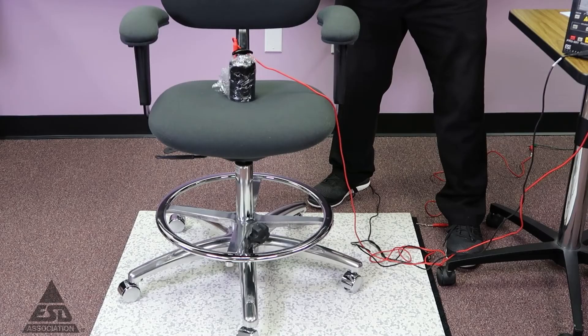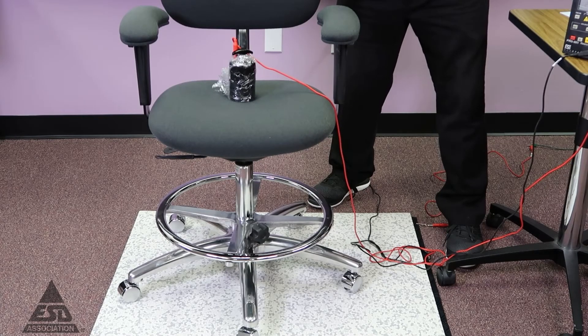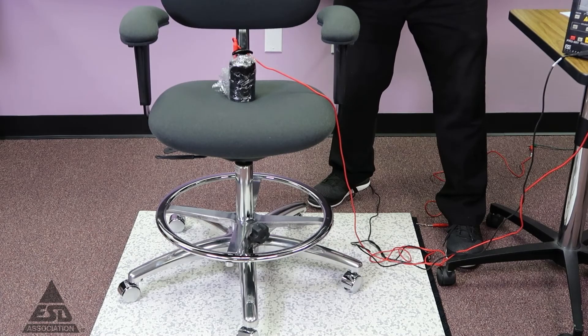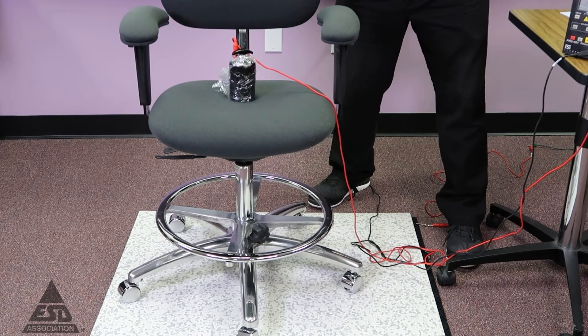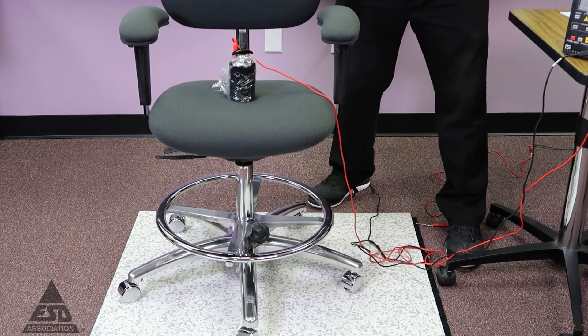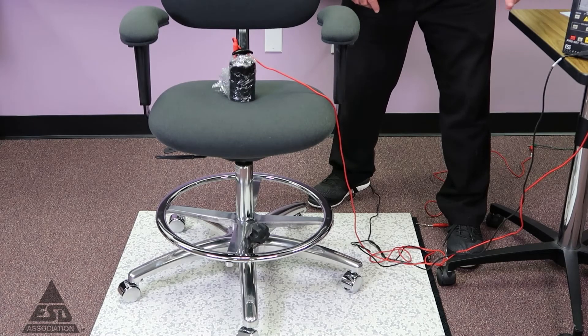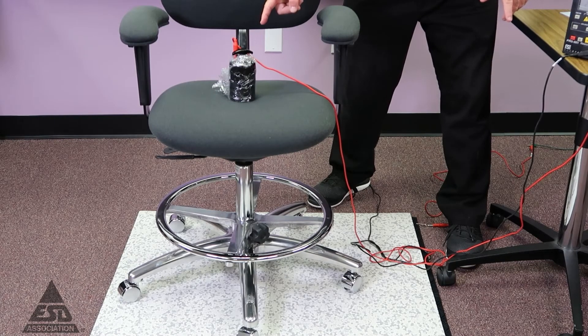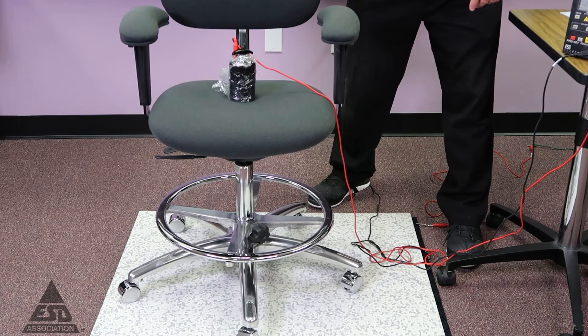So if we're making compliance verification measurements, you'll notice I've removed all the insulators and the ground panel. Now we're going to measure through the floor. The floor is connected to ground, and so we're going to measure from the chair all the way to ground through the floor.